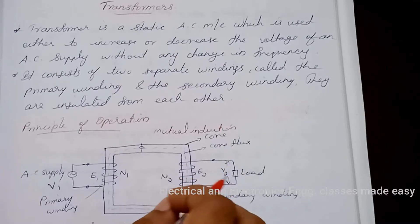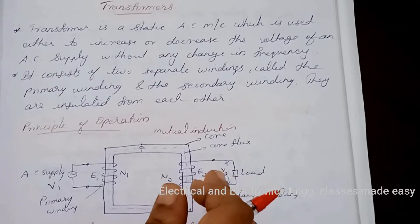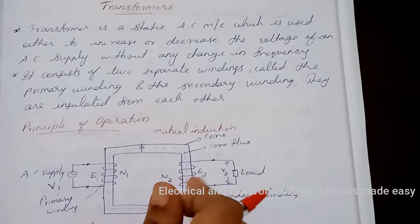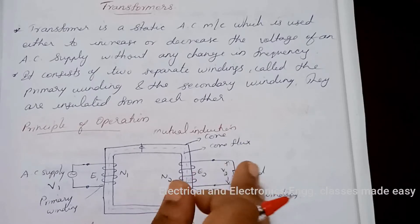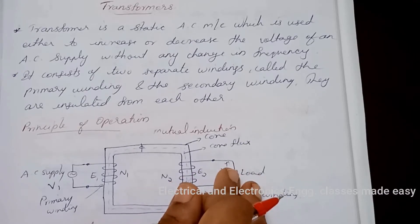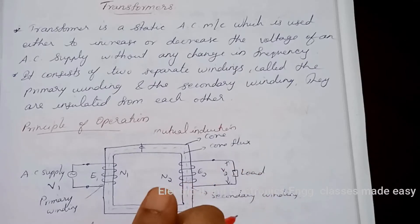A step-up transformer has output voltage more than its input voltage and a step-down transformer has output voltage less than its input voltage.